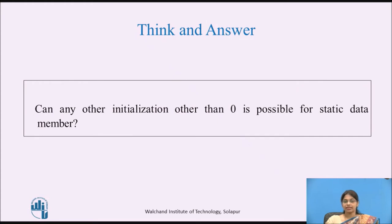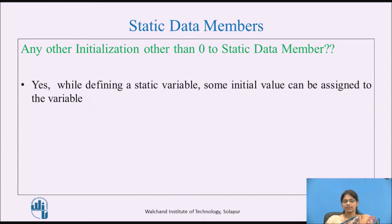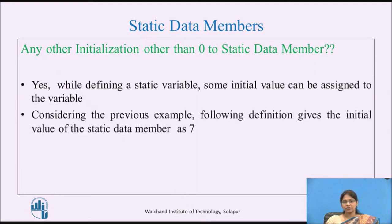Try to think of an answer: Can any initialization other than 0 be used for a static data member? Pause the video and note down your answer. The answer is yes — while defining a static variable, some initial value can be assigned to it. For example, following the previous example, the definition can give the static data member an initial value of 7. So initialization other than 0 to a static data member is possible.